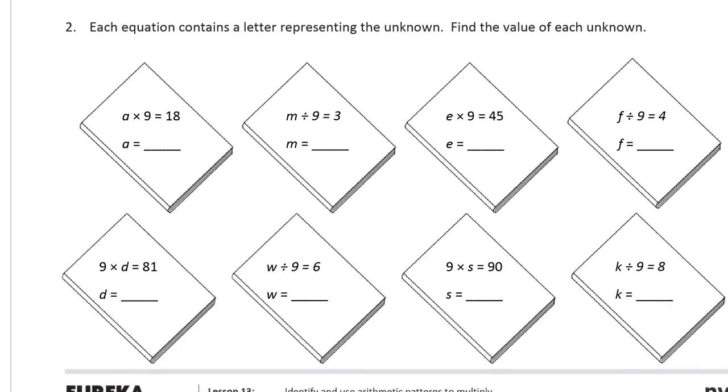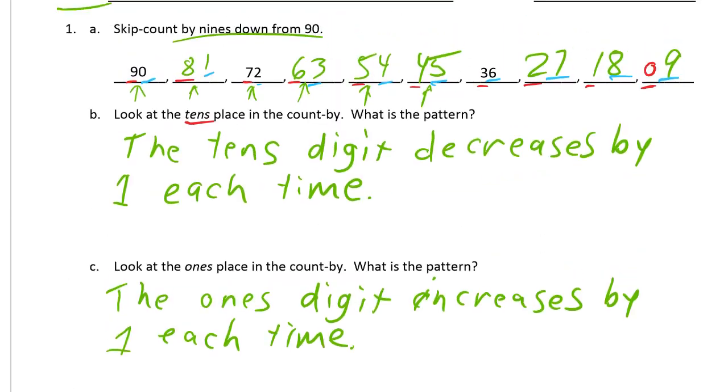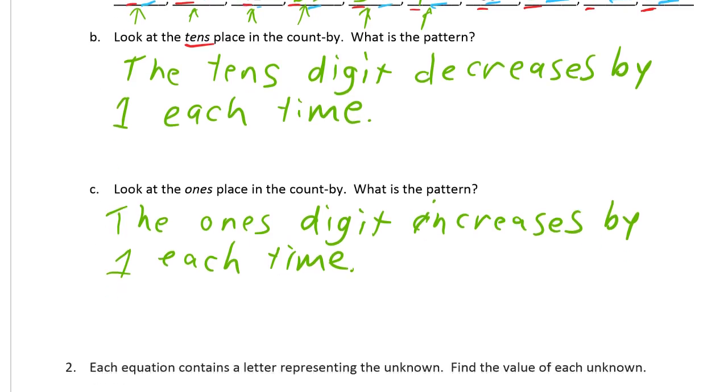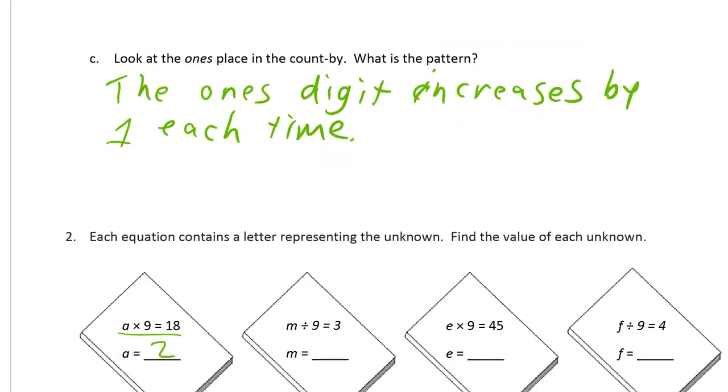Each equation contains a letter representing the unknown. Find the value of each unknown. So how many nines equals 18? That's two nines. And we just figure this, it's all up here, right? But this is looking at it backwards. This is one nine, two nines, three nines, four nines, five nines, and so on. So you can just look back up here and figure out how many nines it is.